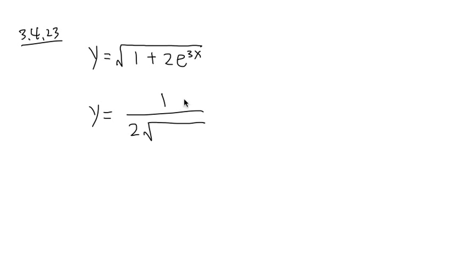The original inside, you just copy this down, 1 plus 2e to the 3x, like that. So that's the general form, 1 over 2, and open the square root, put the inside back here.